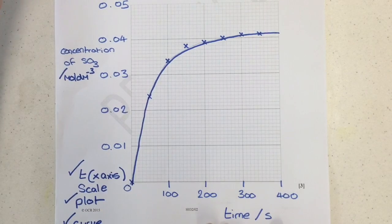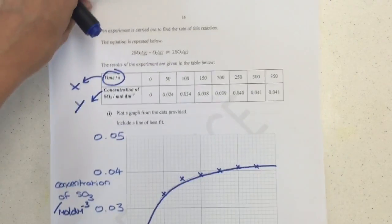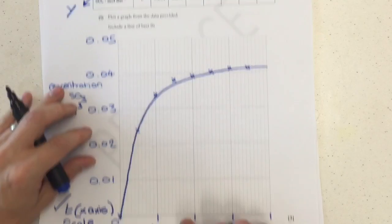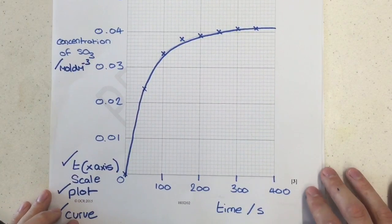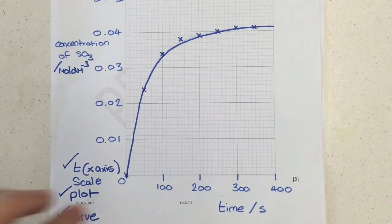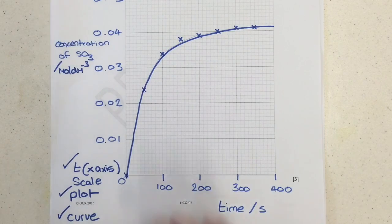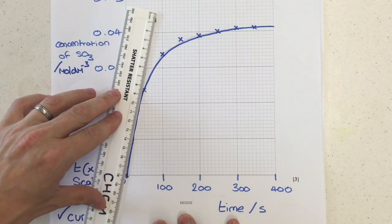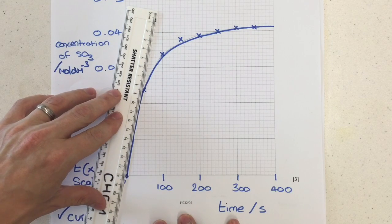Now for the next section, it has asked us to use the graph to determine the initial rate of this reaction. Show your working below and on the graph. I'm going to do all the working out on the graph just to stop me having to flip back and forth. Since we've been asked for the initial rate, we need to do the tangent to this curve at t equals zero. So we're going through the origin just here and drawing a tangent against our curve.